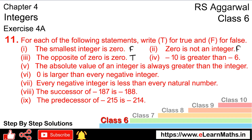Next part: minus 10 is greater than minus 6. As I have told you, with negative values, the bigger the number, the smaller the value. Here minus 10 is stated to be greater than minus 6 — this is false, because 10 is greater than 6 but being negative makes it smaller. Hence this statement is false.